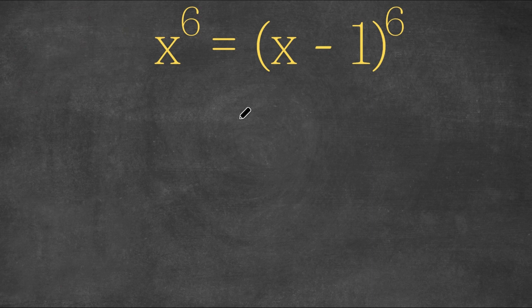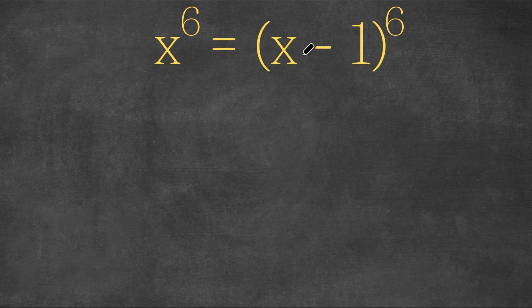Welcome back to Click Academics. In today's video, I'm going to go over a nice algebraic equation. We have x to the power of 6 equals x minus 1 to the power of 6. If you notice, both sides of the equation are to the power of 6, so to simplify, why don't we find the sixth root of both sides to make it much simpler.